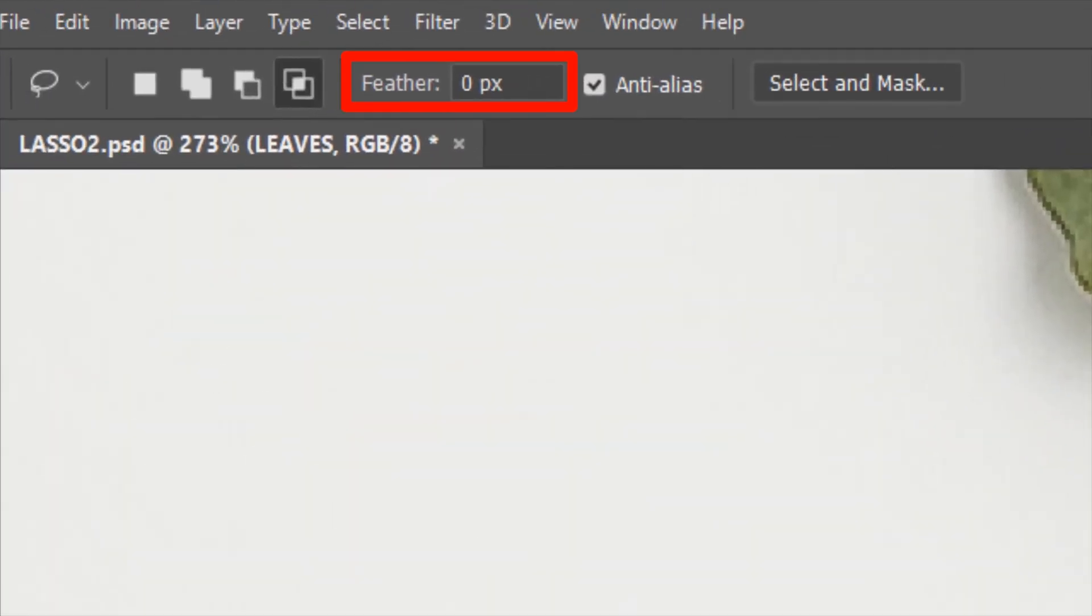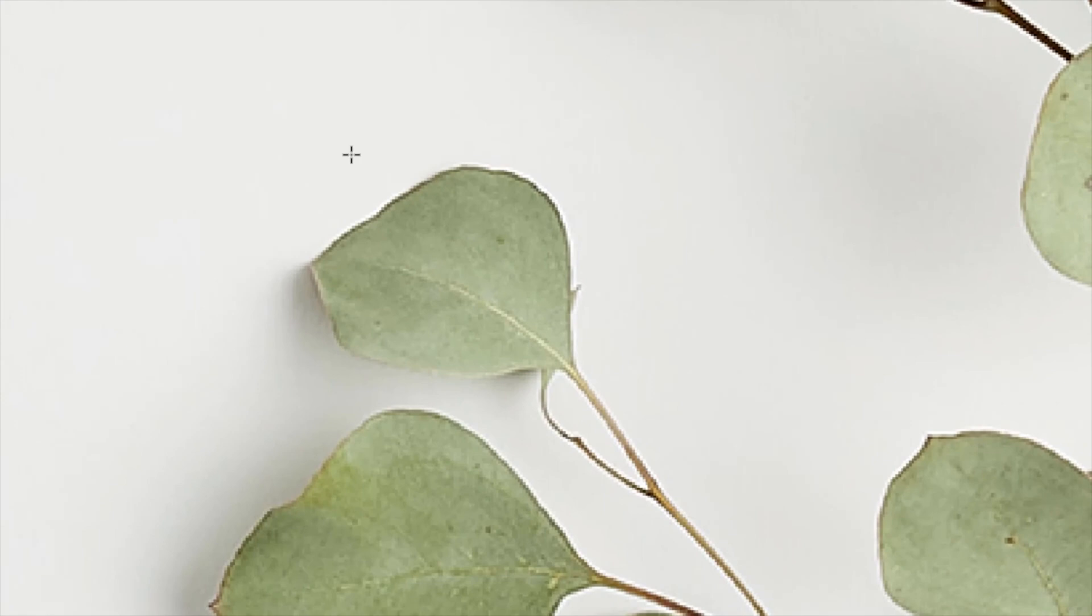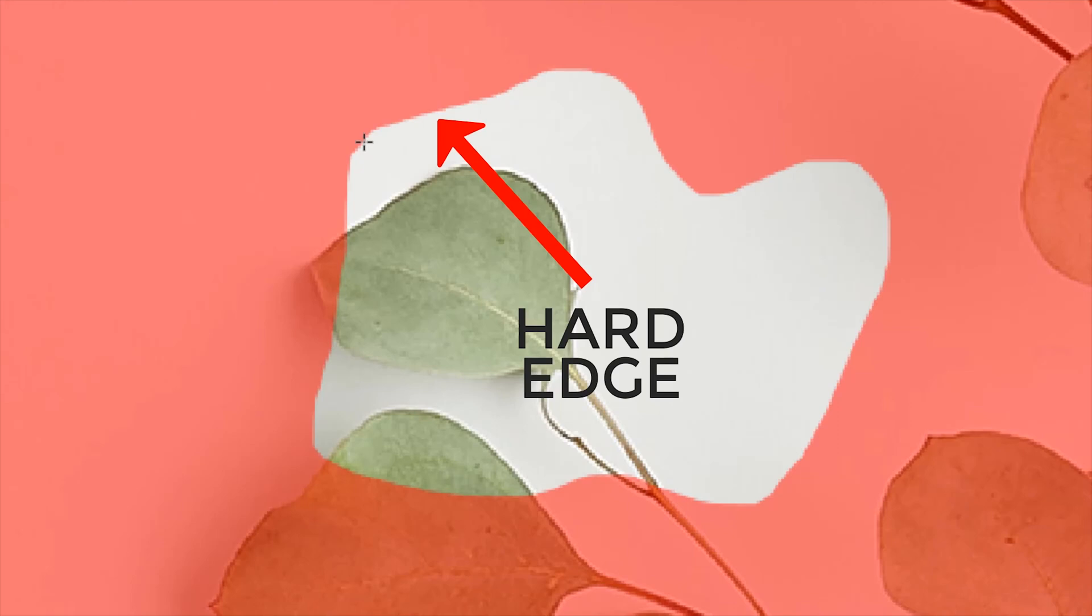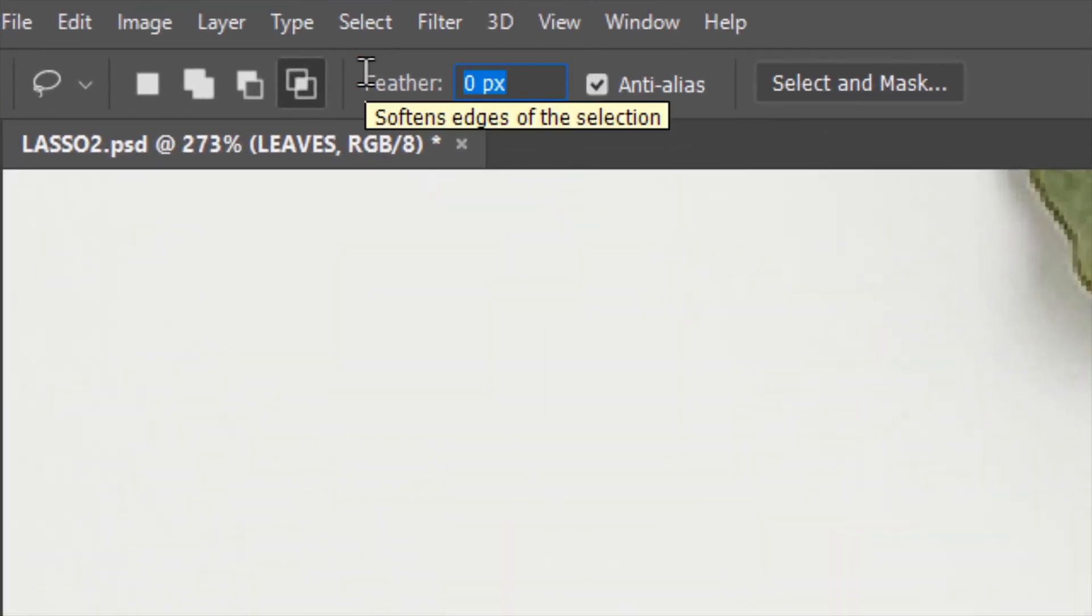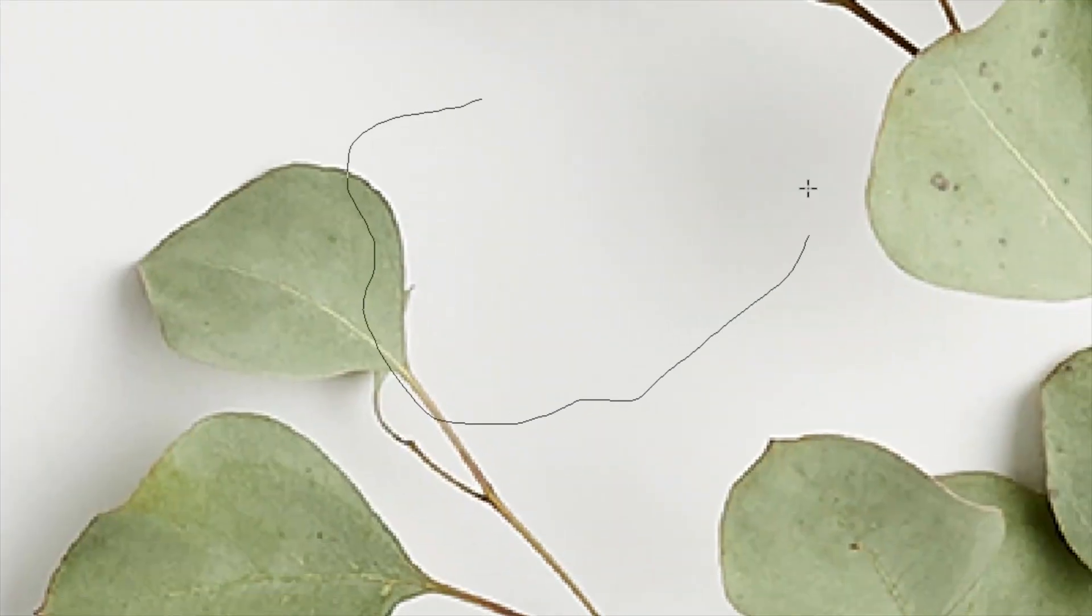With the feather set to 0, if I now make a selection, the edge of the selection will be hard. But if I set a positive value in the feather and then make the selection, the edge will be soft.